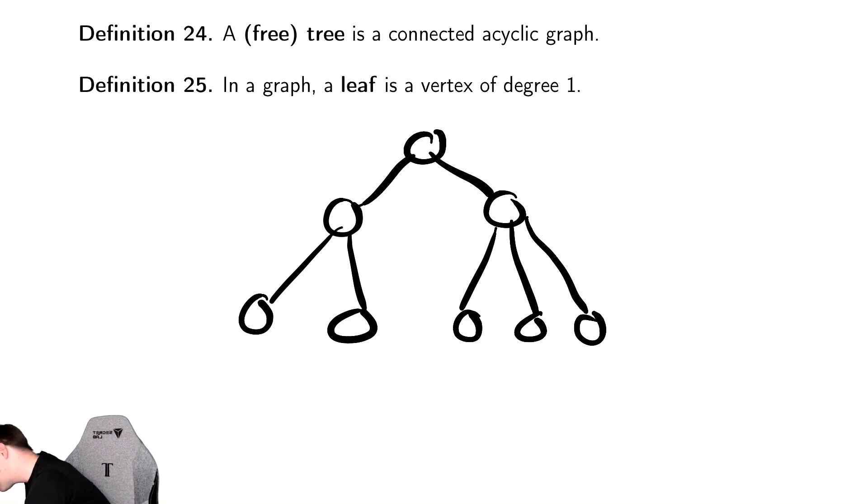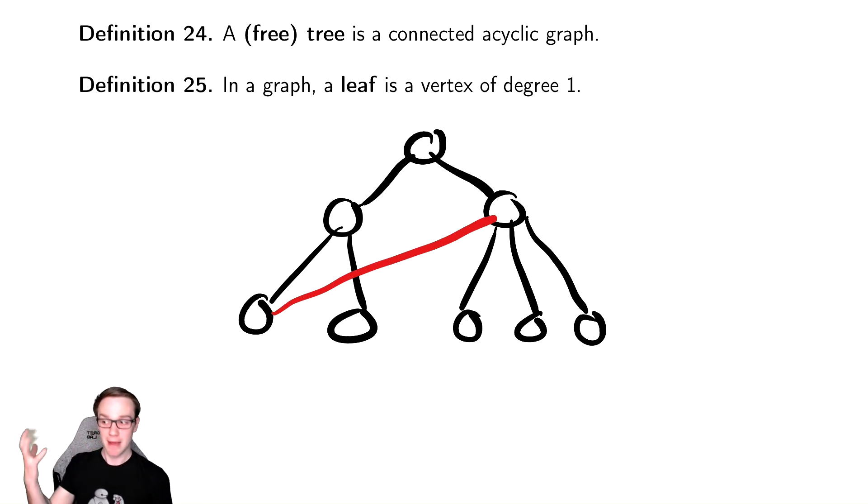However, if I were to do this, this thing looks like it's a child, but also it's a parent, and it gets a little confusing, and you can start drawing this in all sorts of different ways, and it gets totally ambiguous about this idea of a child and a parent because of the existence of this cycle.